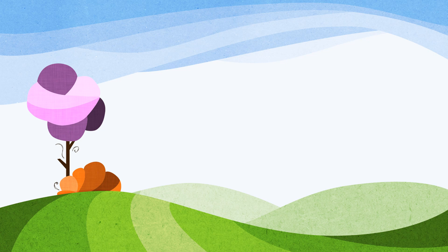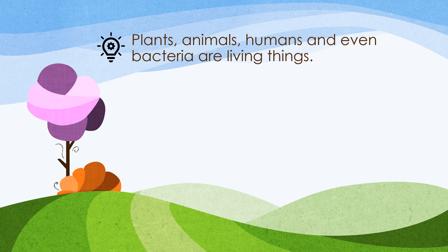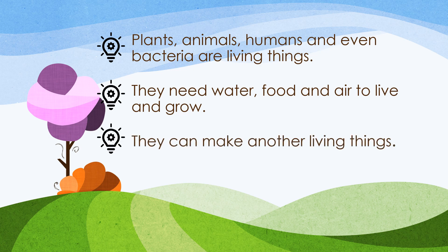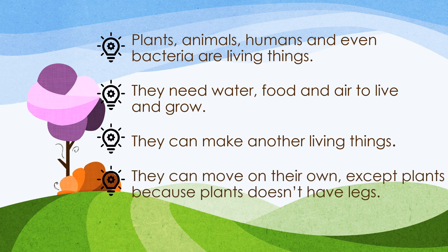So we will summarize what we have learned in this lesson. Plants, animals, humans, and even bacteria are living things. They need water, food, and air to live and grow. They can make other living things. They can move on their own, except plants, because plants don't have legs — only animals and humans can move around. I hope you have learned something in this video. Until next time, bye!